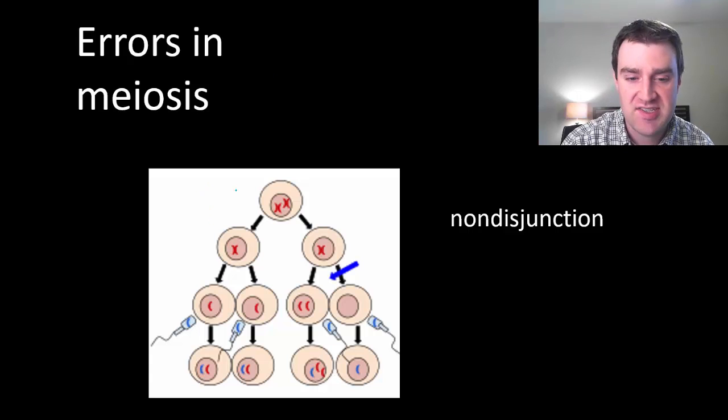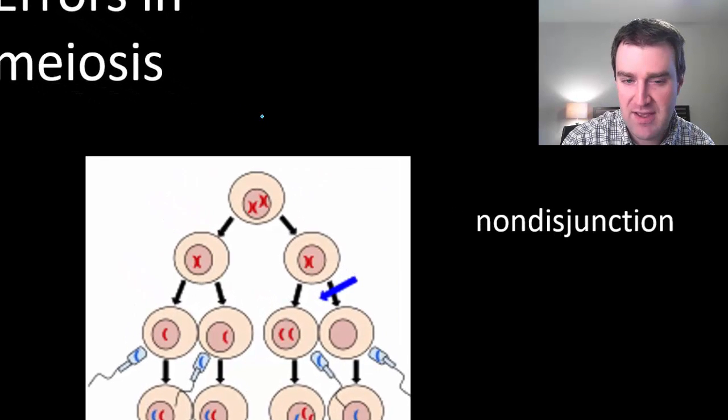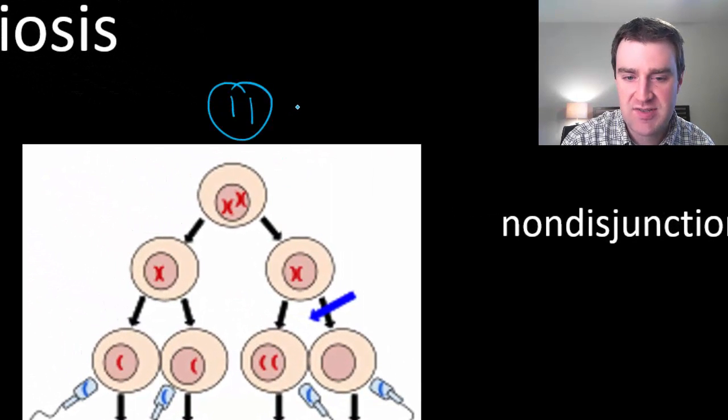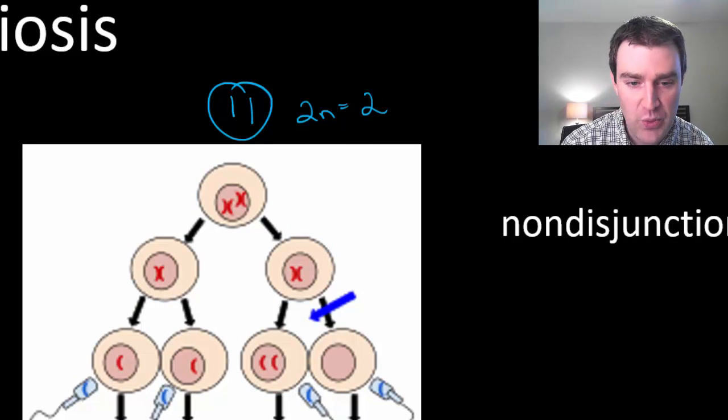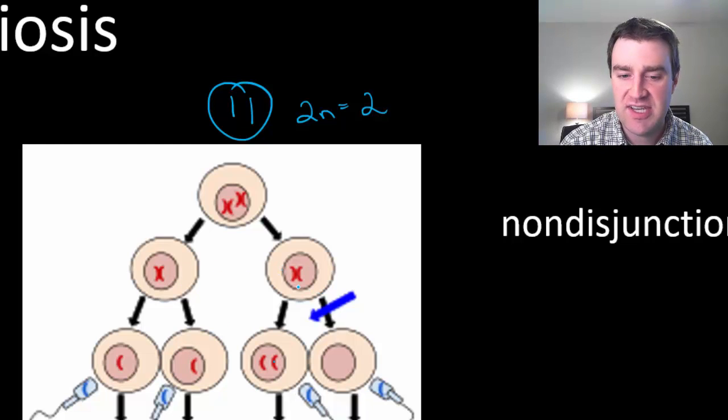So this is an example in this drawing where maybe the initial diploid cell just had two chromosomes in it. So maybe the diploid number was just two or one pair. We copied all the DNA and then we split apart the homologous pairs here. And maybe we did that correctly but it looks like over here on this right side that we didn't split the X copies correctly.